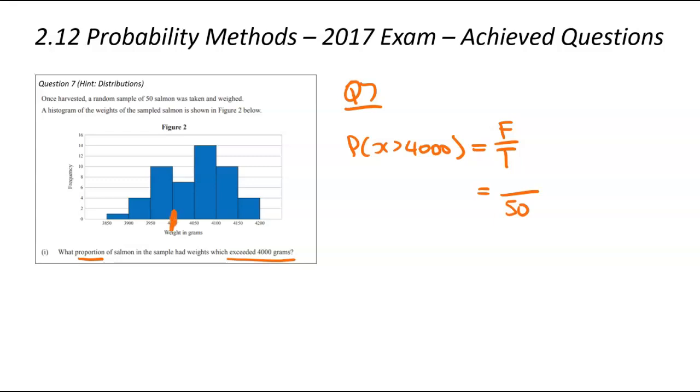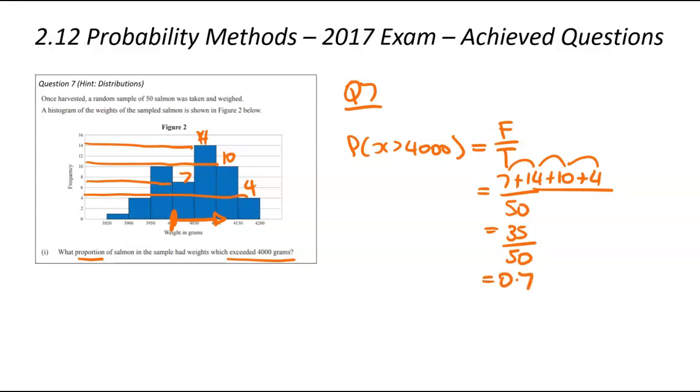Looking at my graph, I can see 4,000 over here. Anything in this direction is above 4,000 and needs to be part of that F total. That first bar is 7, then we've got 14, then we've got 10, and then we've got 4. If we add up all of those numbers, we're going to write 7 plus 14 plus 10 plus 4. 7 plus 14 is 21, plus 10 is 31, plus that 4 is 35. We're going to have 35 salmon out of the 50 exceeding 4,000 grams, and I'm going to change it to a decimal 0.7.